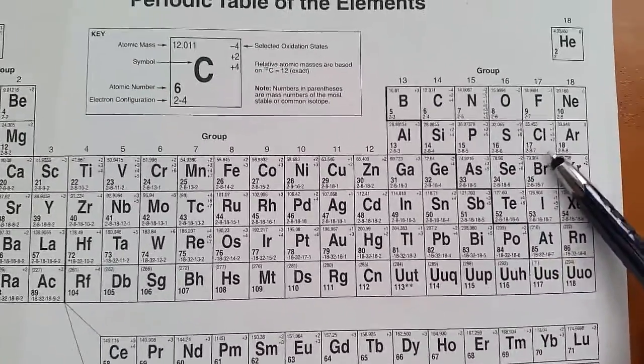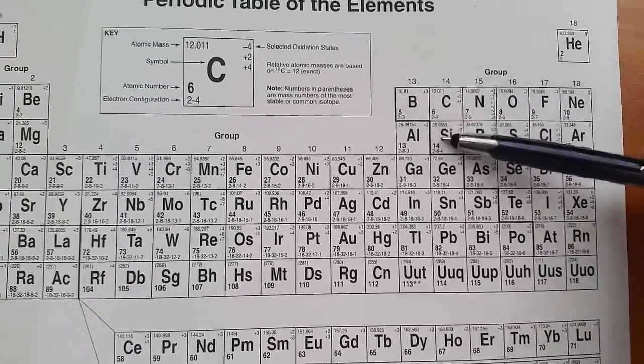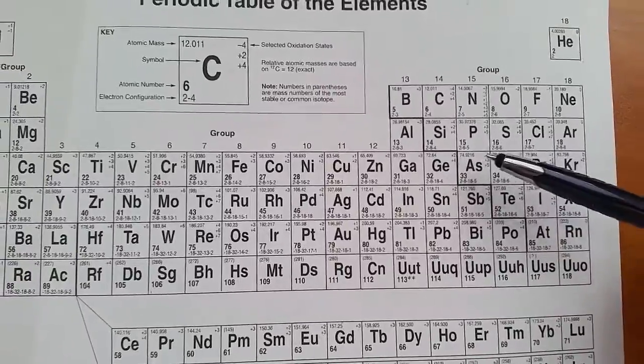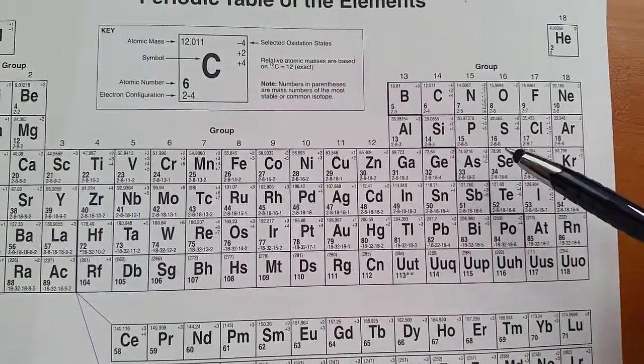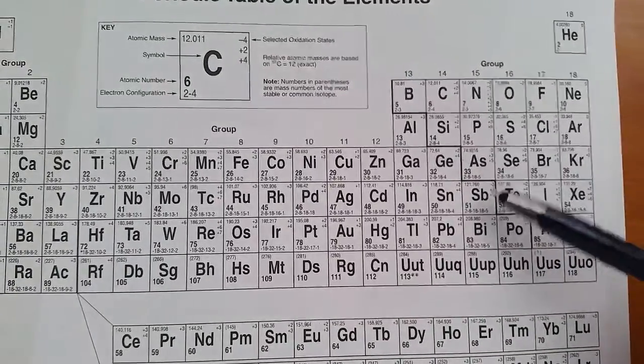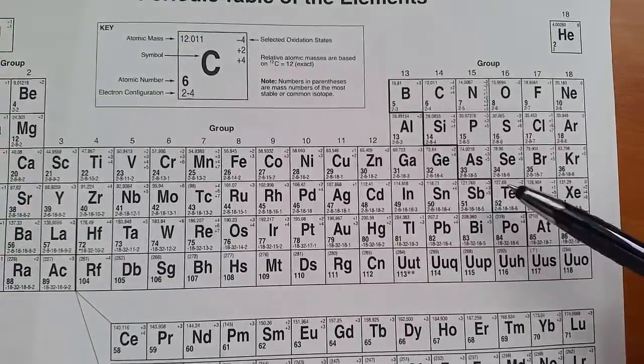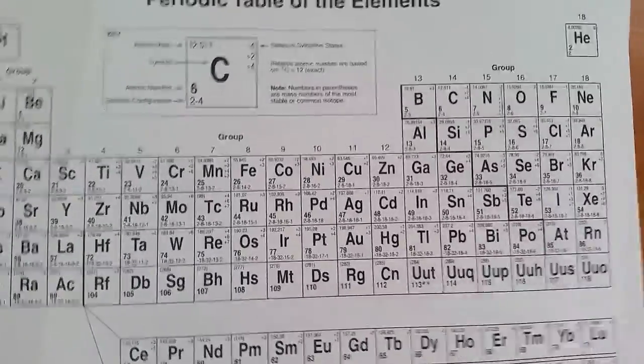So our basic examples from metalloids, boron, silicon, germanium, arsenic, and antimony are the main examples we're going to use for metalloids.